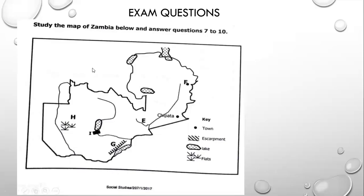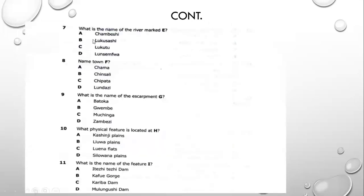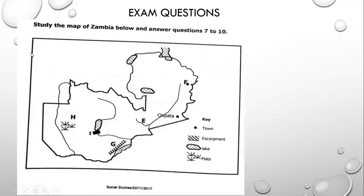I mentioned the Luangwa River and explained that smaller rivers which join or branch off a bigger river are called tributaries. Here on the options, we have Kambeshi, Lukusashi, Lukutu, and Lunsemfwa. The tributary for the Luangwa River is the Lunsemfwa River, so here we have the Lunsemfwa River at E, branching off the Luangwa River.